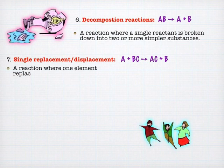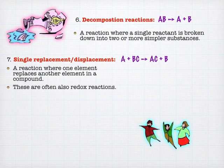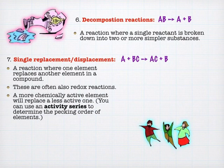Single replacement or displacement, depending on where you learn the terminology, is where you have a lone element at the beginning, and then it bumps somebody out of a compound, and somebody else is by themselves at the end. These are typically redox reactions because you're going to have an element going into a compound and another one going out. Whether or not these will happen is whether a more active element can replace a less active element. This is based off the pecking order of chemistry called the activity series. I'll try to include a link, but if it isn't working, just type in chemical activity series and you'll find plenty of them.